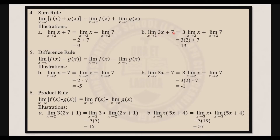Another example: the limit of 3x plus 7 as x approaches 2 equals 3 times the limit of x as x approaches 2 plus the limit of 7 as x approaches 2. Applying the constant multiple rule, that is 3 times 2; applying the constant rule, the limit of 7 is 7. So 3 times 2 plus 7 gives us 6 plus 7, which is 13.